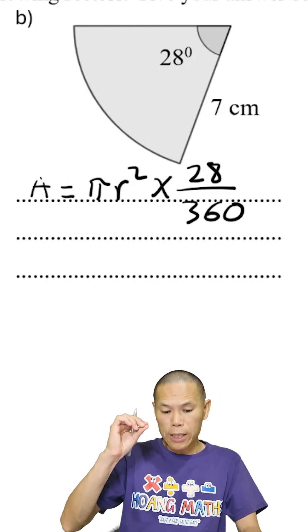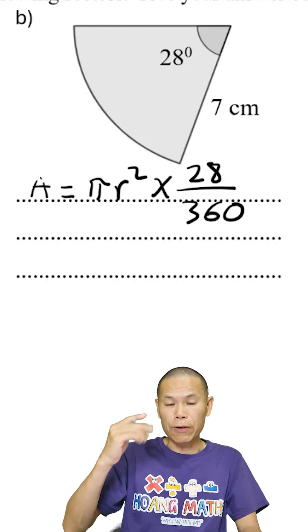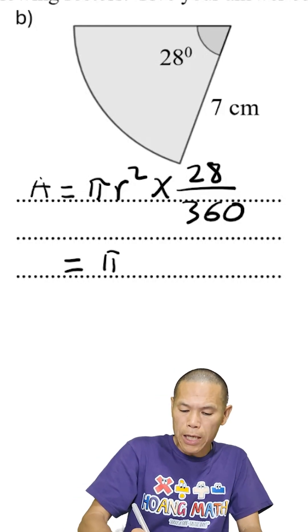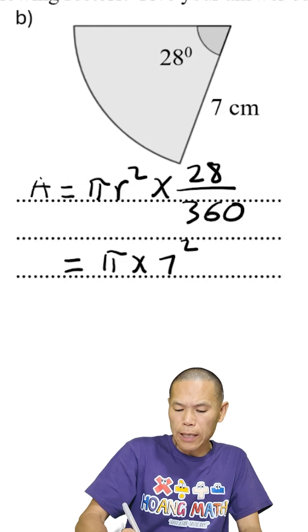And we know that the radius in this case is 7. So we just replace with that. So that will give me pi times R squared, that is 7, times by 28 out of 360.